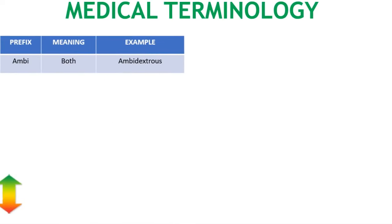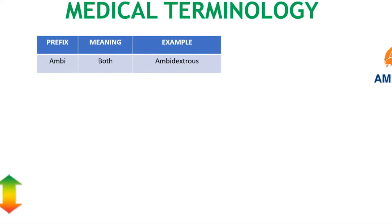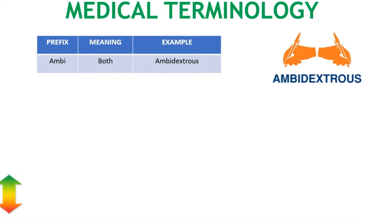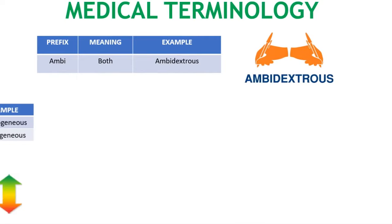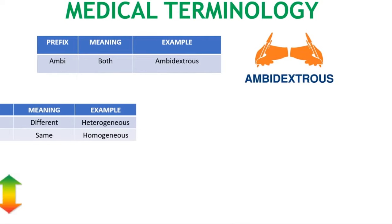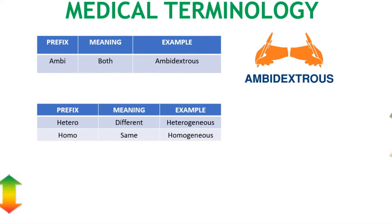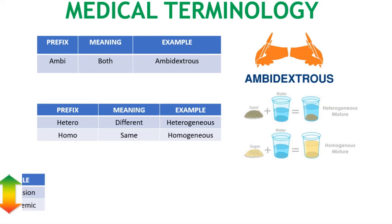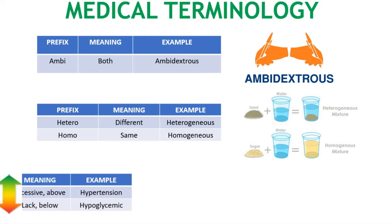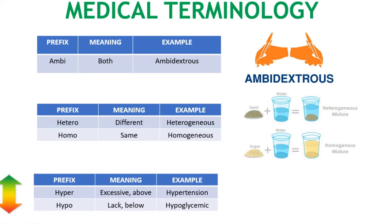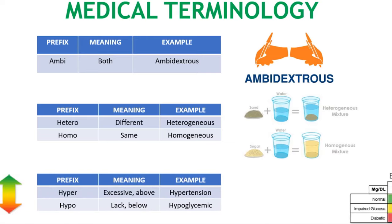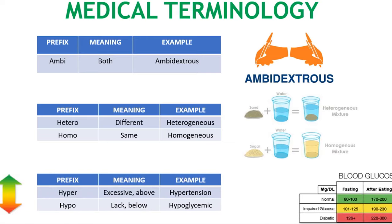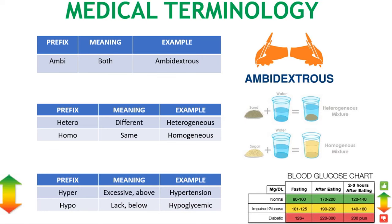The first prefix, ambi, means both. Ambidextrous is the example — ambidextrous means someone who is able to use both hands, right and left hands, equally to write or to do any work.